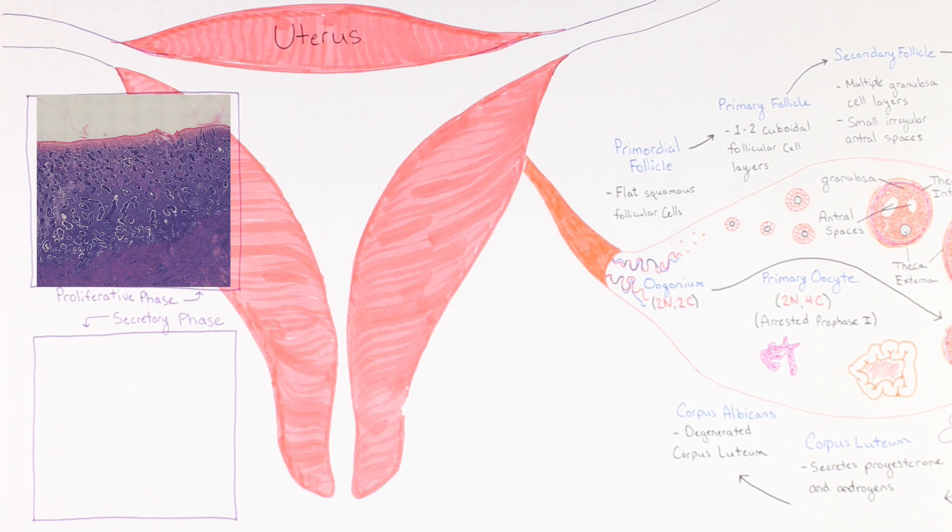The proliferative phase is defined by a shallow proliferating endometrium with tubular glands open to the surface. The proliferative phase occurs during the simultaneous development of the oocyte and this phase ends with the release of the secondary oocyte during ovulation. For this reason, the proliferative phase is on top to remind you of the connection between the oocyte development in the ovary while the endometrium is proliferating.